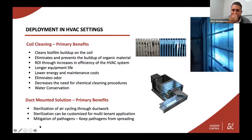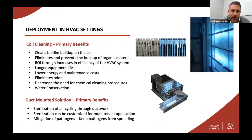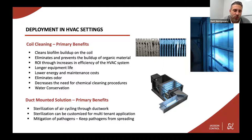Talking about UVC deployment in HVAC settings, we'll focus on two of the most common applications. The first is coil cleaning, which is what you primarily see UVC light used for in HVAC settings. The benefits include cleaning the biofilm buildup around the coil — biofilm is mold and dust that accumulates over time. It eliminates organic material buildup, provides measurable ROI through HVAC efficiency increases. A biofilm buildup of just 0.006 of an inch will lower efficiency by 16%. You'll get longer equipment life, lower energy and maintenance costs, odor elimination, and decreased need for chemical cleaning. A notable benefit is water conservation — water condensate coming down the coil becomes distilled water once UVC is introduced, which can be reused as cooling tower makeup water.